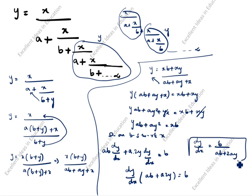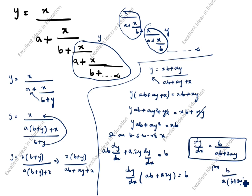This is the answer, or we can write it as b divided by a(b + 2y). Thanks for watching this video.